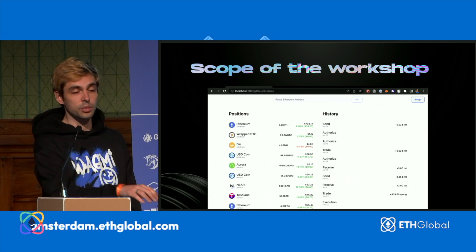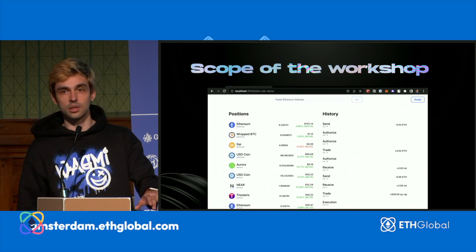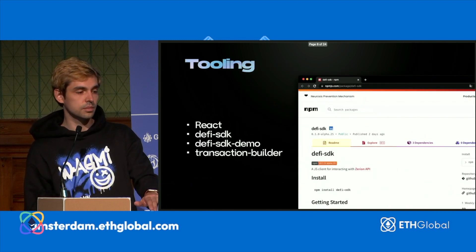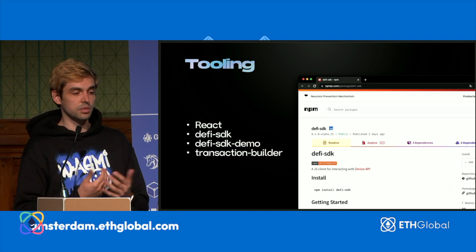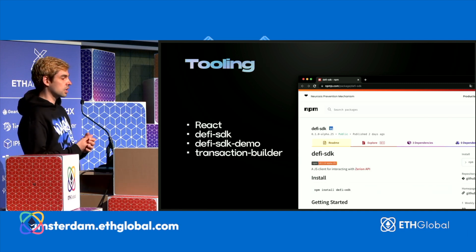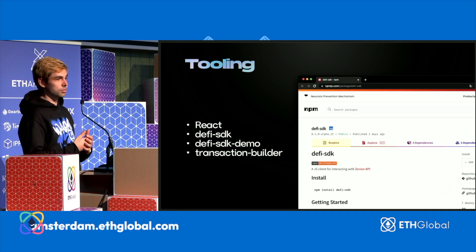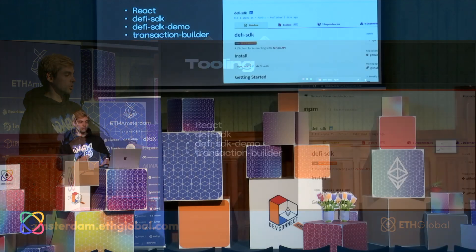The demo also includes swapping functionality, so you can get quotes from most liquidity sources and DEX aggregators. For the workshop, we will use the following tooling: React, the DeFi SDK available on NPM, the DeFi SDK demo as a GitHub repo prepared by our developers, and the Transaction Builder API, which allows you to construct various transactions — from swaps to staking, lending, and withdrawing assets from various DeFi protocols.